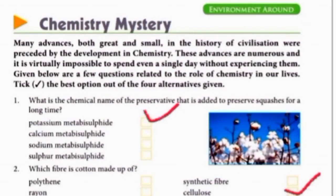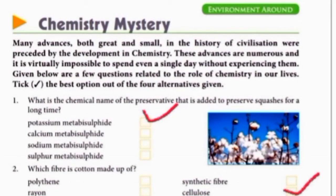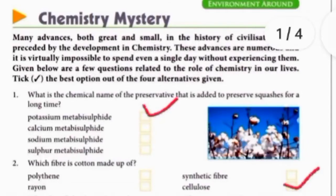As you know, science plays a very important role in our life — you can see science around you. Today's topic is chemistry. Chemistry is full of mystery. First question: what is the chemical name of the preservative added to preserve squashes and jams for a long time? It is potassium metabisulfite, also known as KMS.